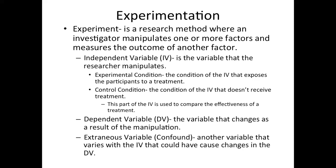In order to do that, we have the independent variable and the dependent variable. But we also have to get rid of extraneous variables or confounding variables. With a correlation, there is an infinite number of outside factors that could have caused an outcome. With an experiment, we do our best to eliminate confounds — those outside factors — so that only the independent variable causes changes to the dependent variable.